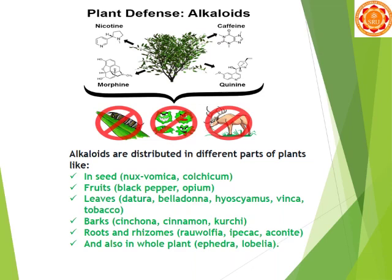From bark, like cinchona, which has anti-malarial properties, and cinnamon. From roots and rhizomes, we get Rauwolfia — we get an anti-hypertensive drug from Rauwolfia serpentina. Aconitine from aconite is another example of roots and rhizomes. Also, in the whole plant, like ephedra and lobelia.